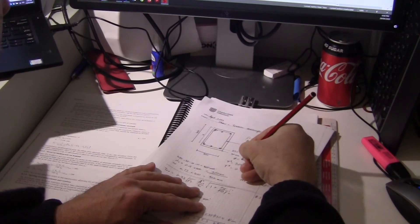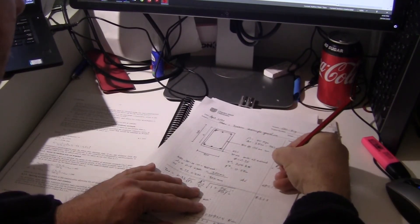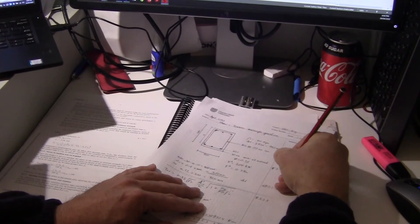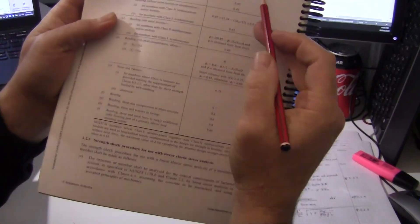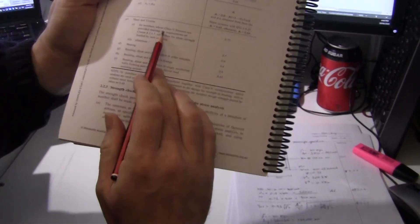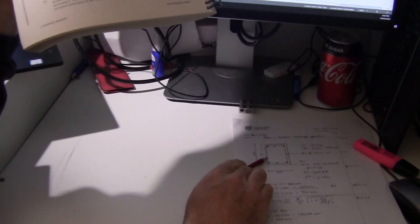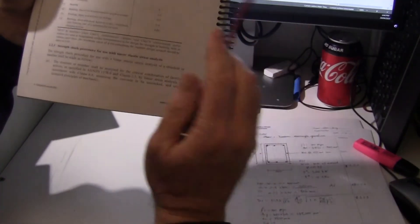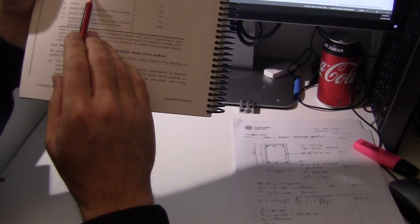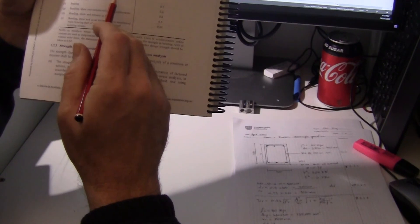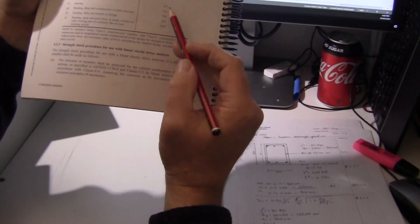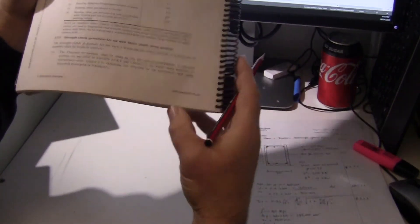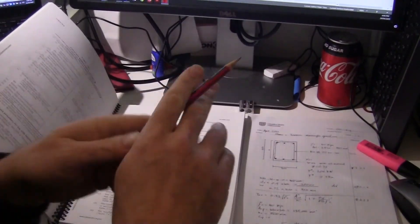Phi equals 0.75 and that comes from table 2.2.2. There's phi capacity reduction factors, shear and torsion for members where N class fitments are provided. We are using an N10 so that's an N class bar meeting the requirements of clause 8.2.1.7. We get to use 0.75. If you're in doubt you can use the 0.7.